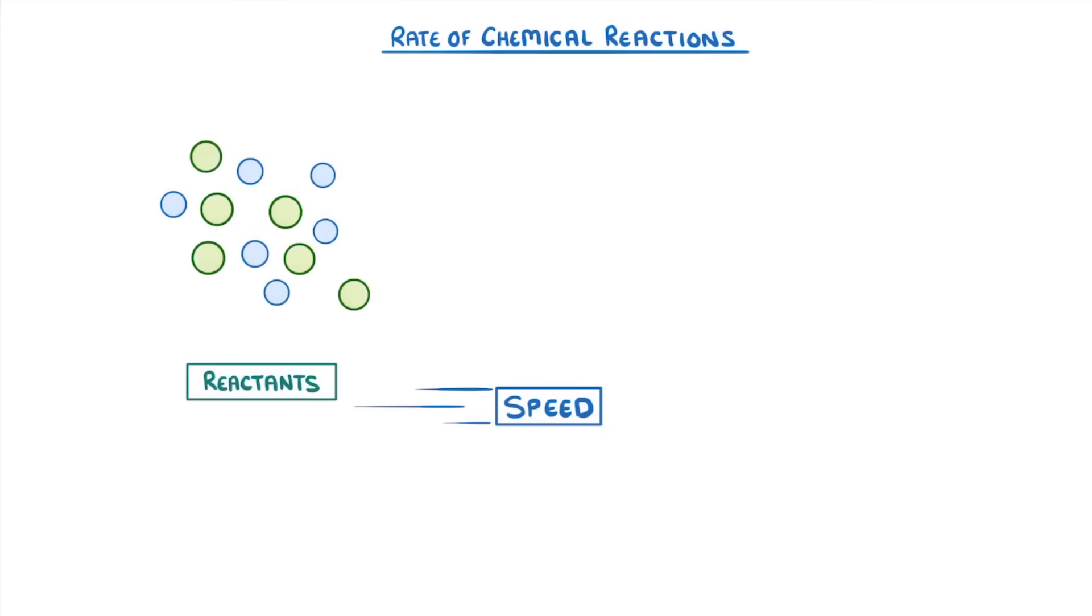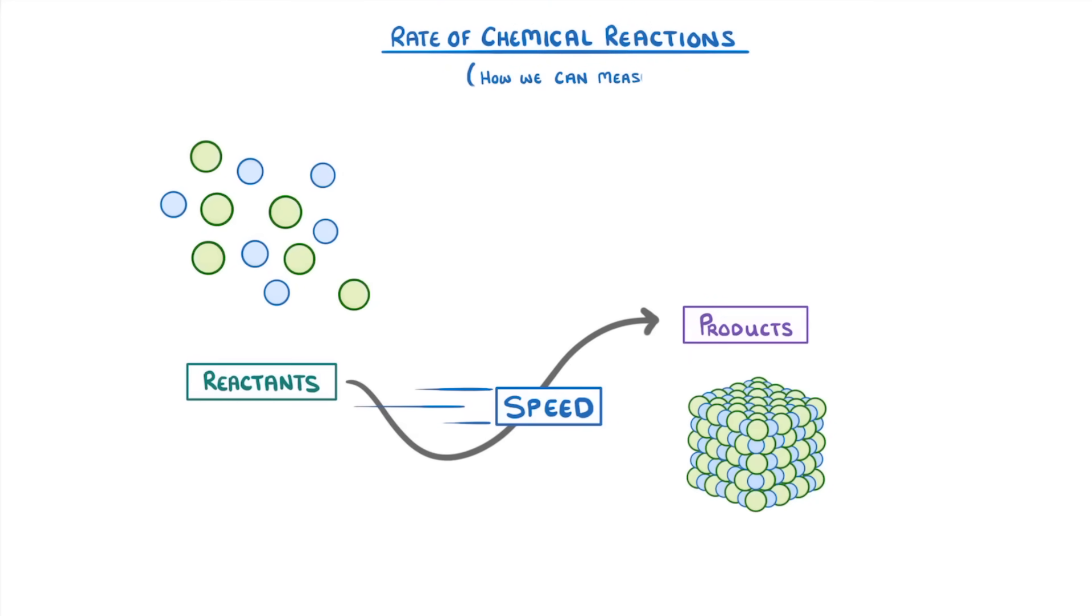In this video, we're going to look at the rate of chemical reactions, which just refers to the speed with which the reactants get turned into products. And we'll also see how we can measure this rate and how to show it on graphs.